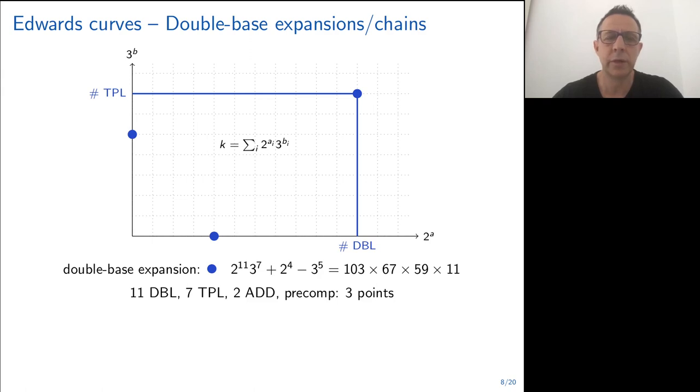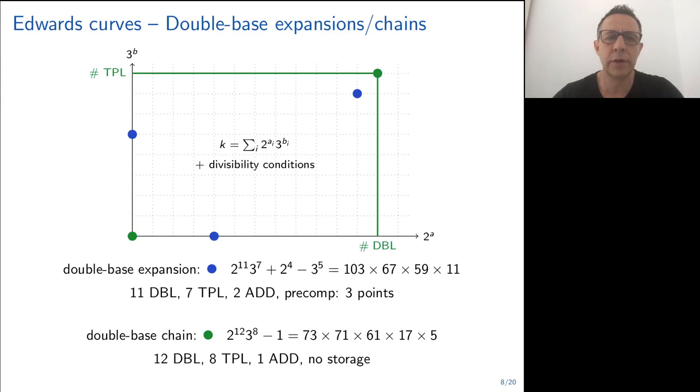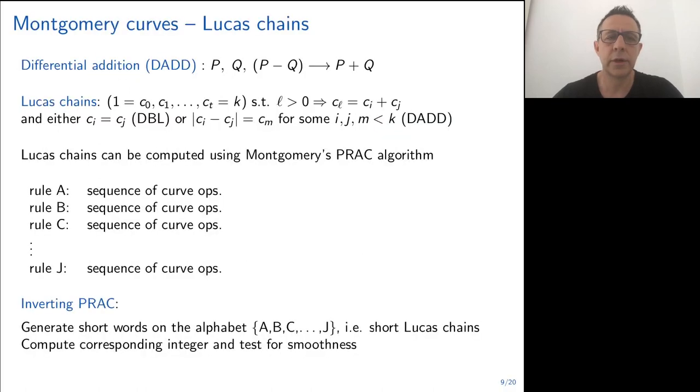In the picture below, the dots are represented according to the corresponding powers of 2 and 3. You have the powers of 2 on the x-axis, the power of 3 on the y-axis, and each dot corresponds to a term of this sum. As an example, I give you an integer that can be written as a sum of 3 terms of that form. If you use this representation to compute your scalar multiplication, you will need 11 doublings, 7 triplings, and only 2 additions, and you may need to pre-compute 3 points. Double base chains are subsets of double base expansions with extra divisibility conditions that allow computing without pre-computing points. In this example, we have a double base chain with only 2 terms that requires 12 doublings, 8 triplings, and only 1 addition.